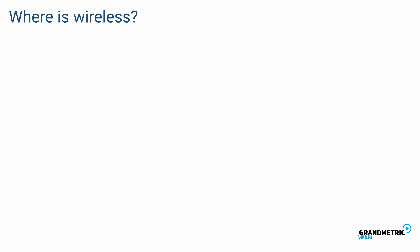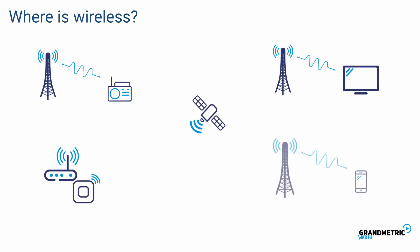Where can we find wireless now? It is used mostly for broadcasting or communication in radio, television, satellites, Wi-Fi and mobile networks such as 3G, 4G or 5G. But wireless can be used not only to transmit data. For example, radars are based on waves.